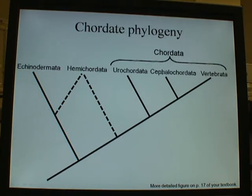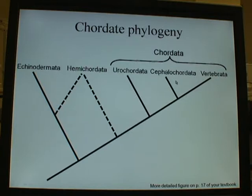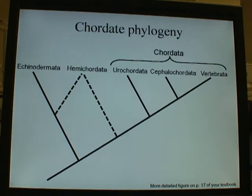Within chordates there are three major groups: the urochordates, the cephalochordates, and the vertebrates. The urochordates include two major groups you'll see in the lab — the tunicates or sea squirts, and the larvaceans or house builders. Cephalochordates are a fairly uniform group; the major representative species is from the genus Branchiostoma, with the common name lancelet or amphioxus. Vertebrates are pretty self-explanatory — they are animals that have vertebrae and a spinal column, with one exception that I'll address later.